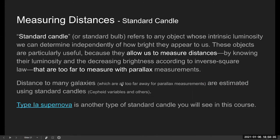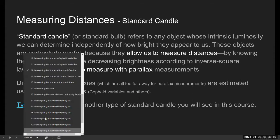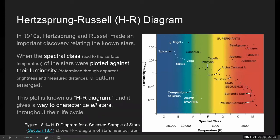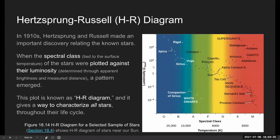The idea of standard candle will come up in the next submodule with a Type 1a supernova. Standard candles are the things that allow you to measure distances to faraway stars, and that's important because that's the information that goes into constructing the HR diagram. To construct this diagram, you need two pieces of information: one is spectral class, which you can read off of the spectrum of the star, but the other is luminosity. You can measure the brightness of a star, but brightness just tells you how bright it appears to us — it doesn't tell you how much light the star is actually outputting. To get that, you need to know the distance.